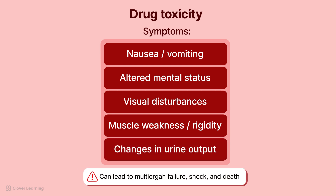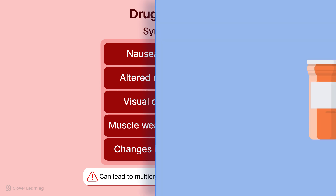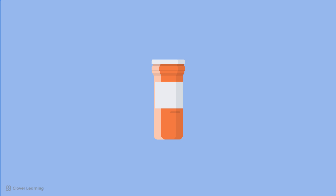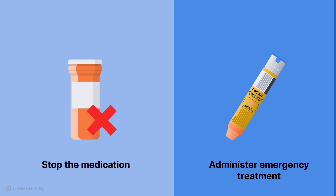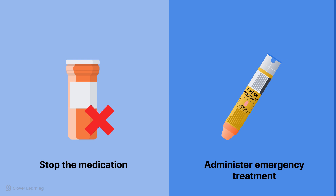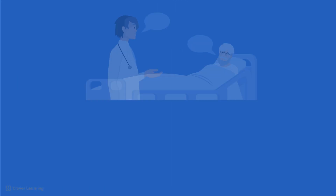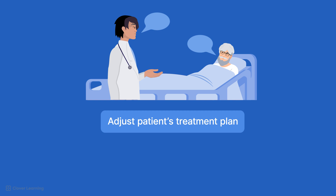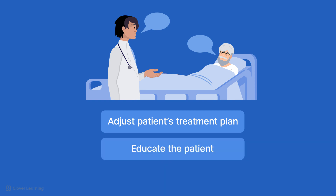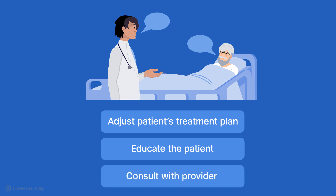Drug toxicity must be treated immediately, as failure to do so can lead to multi-organ failure, shock, and death. Immediate interventions for adverse drug reactions include stopping the medication causing the reaction, administering appropriate emergency treatment if necessary — such as epinephrine for an allergic reaction — and closely monitoring the patient for changes in their condition. Long-term management involves adjusting the patient's treatment plan and educating the patient on recognizing early signs of adverse reactions. It is important to consult with the patient's provider to manage adverse reactions.